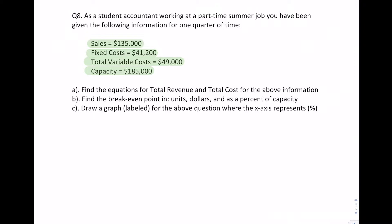One thing students sometimes get stuck on is that they don't have the selling price and the variable costs separately, and they don't know how to set this up. When you only get dollar amounts for sales, fixed costs, total variable costs, and so on, you can right away assume that the selling price is just one dollar to make life easier.